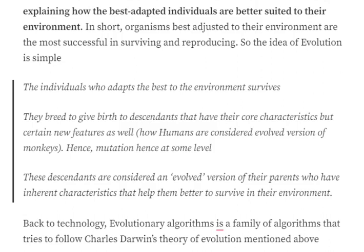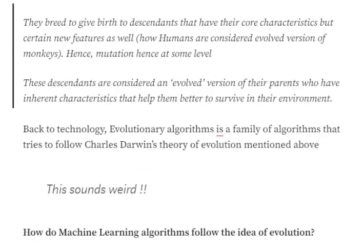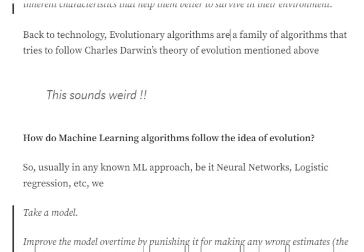That is the whole idea of evolution and the theory of survival of the fittest. Now let's come back to technology — how this idea of evolution gives birth to evolutionary algorithms. In a basic machine learning algorithm like neural networks, logistic regression, or linear regression, what we do is take a model and over time we train it, improving the model by training it again and again with a sample dataset.